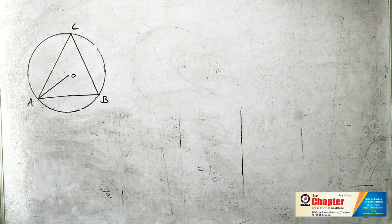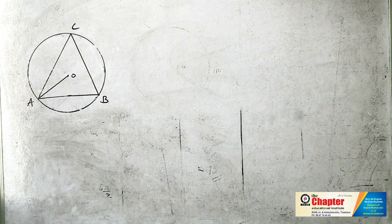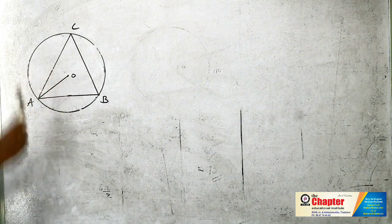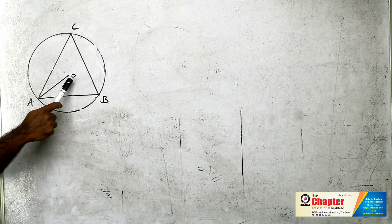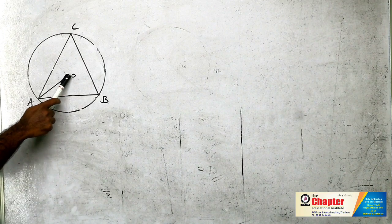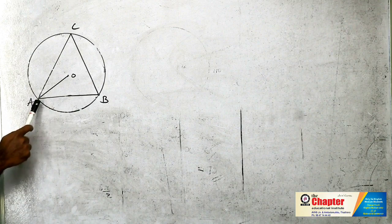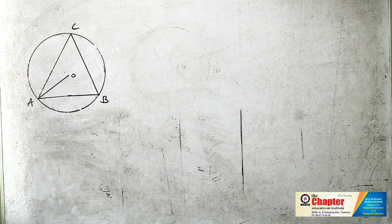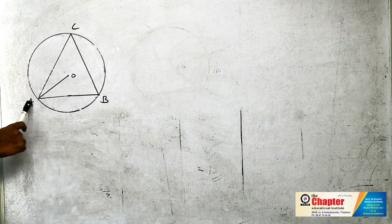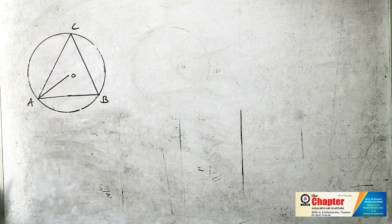Next question. In the picture, O is the center of the circle. A, B, C are points on it.